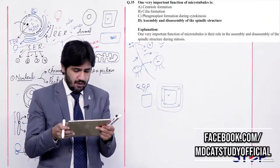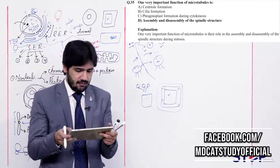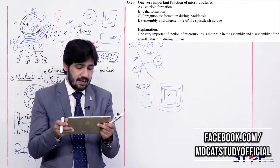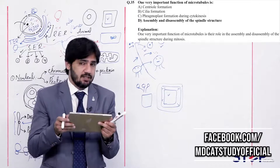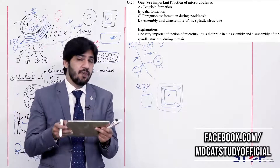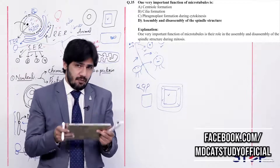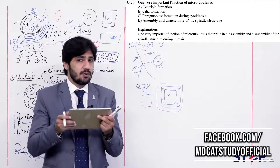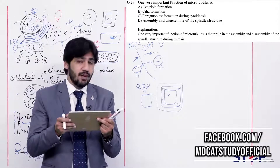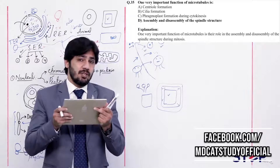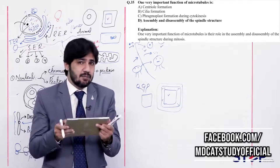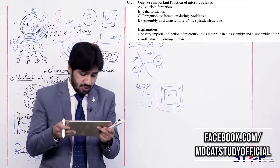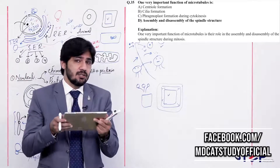Question 35: One very important function of microtubules is (alpha) centriole formation, (beta) cilia formation, (charlie) phragmoplast formation during cytokinesis, (delta) assembly and disassembly of the spindle structure. Microtubules are involved in centriole formation, formation of different organelles, and assembly/disassembly of chromosomes. Among all functions, the most important is assembly and disassembly of the spindle structure during mitosis or meiosis. So the right answer is delta. Charlie — phragmoplast formation — is a function of Golgi apparatus in plant cells.